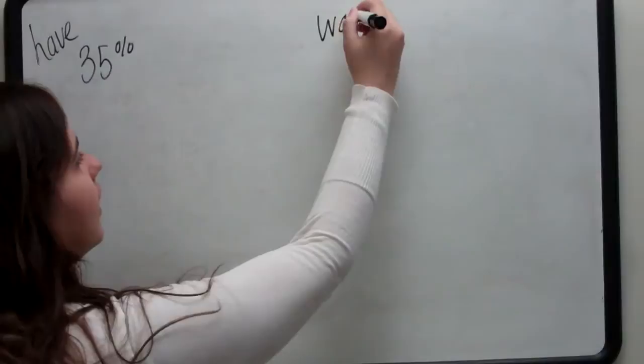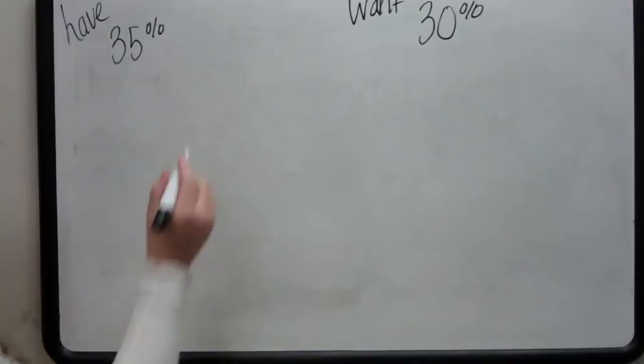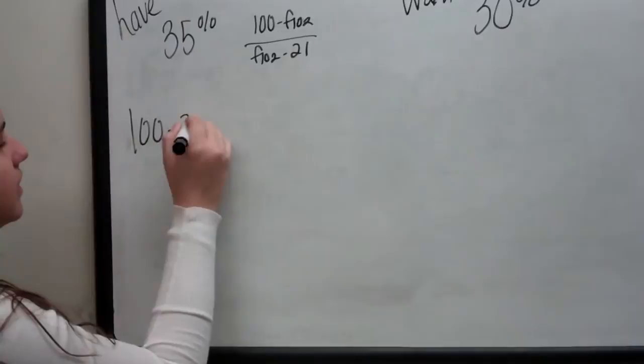So I'm going to start with my air to oxygen ratio. On my LVNs, I have a 35% LVN, and I want a 30%. So in order to find my air to oxygen ratios, I'm going to do the formula 100 minus FiO2 divided by FiO2 minus 21. So to find 35%, I do 100 minus 35 divided by 35 minus 21.